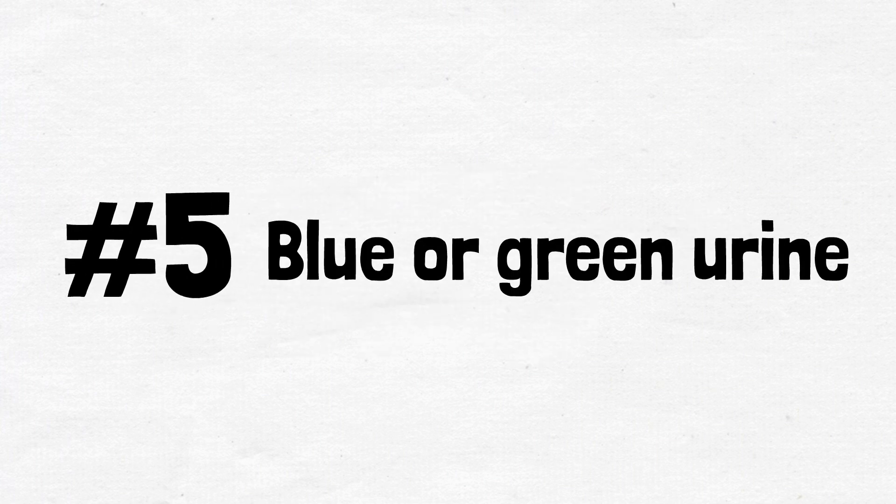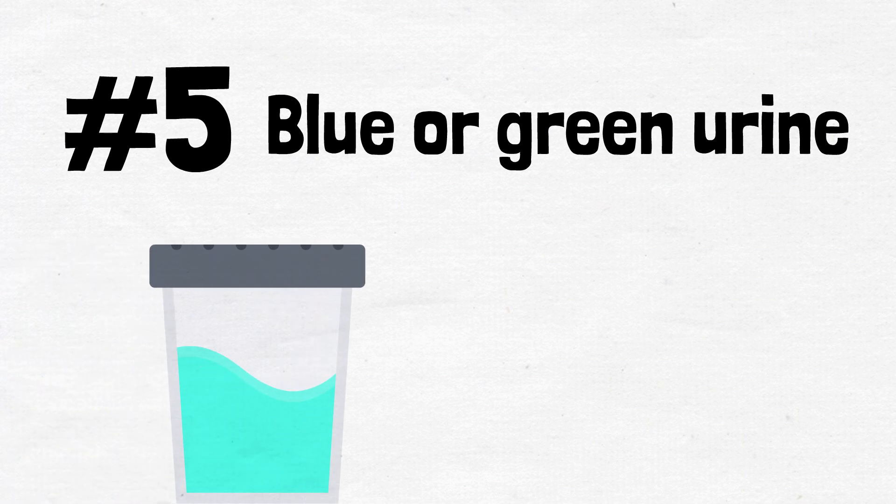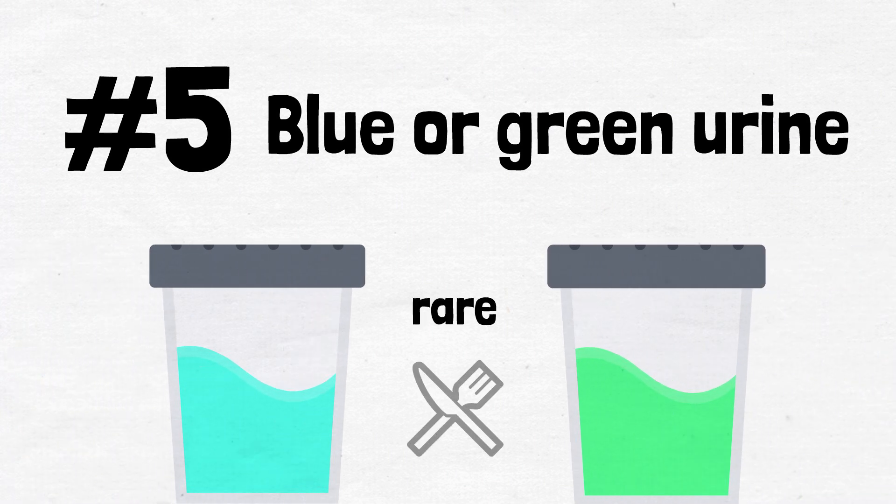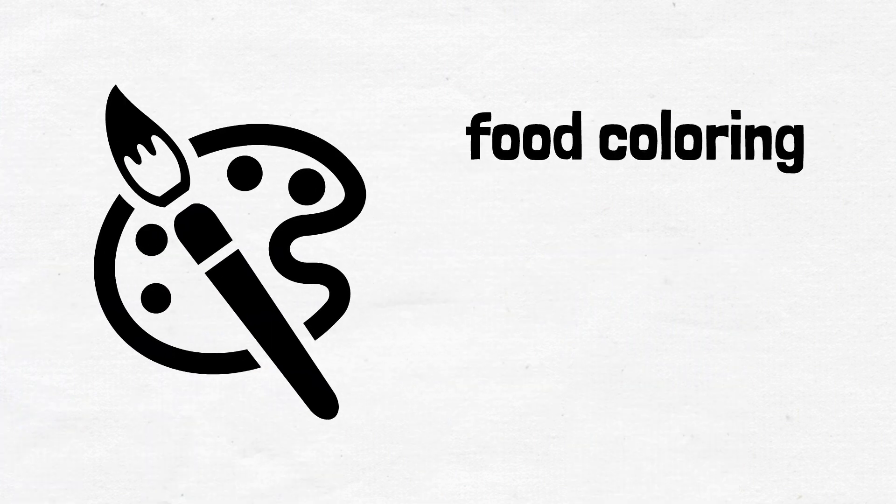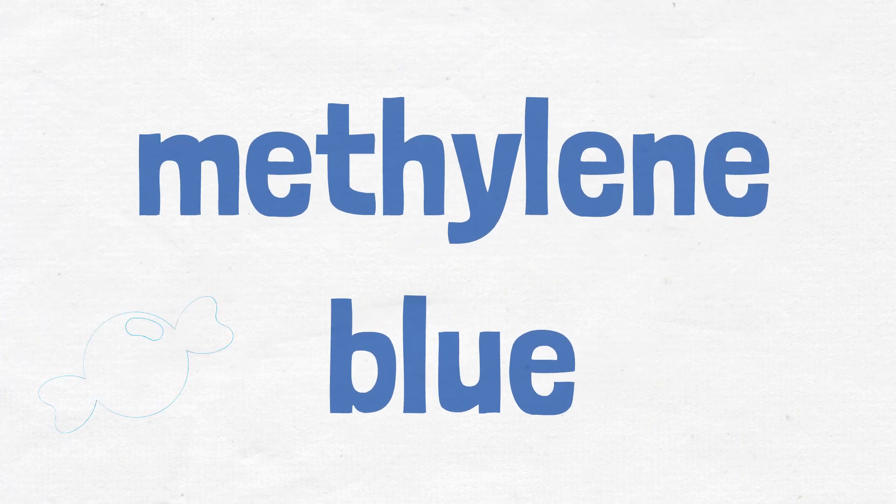Number five: blue or green urine. In general, blue and green urine is rare and most likely connected to something in your diet. It can be caused by food coloring, especially a dye called methylene blue. This dye is in many types of candy and some medications.